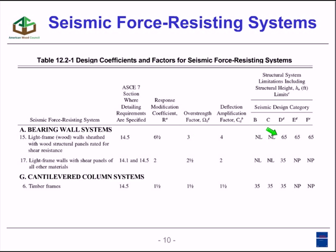This table also contains a height limit. If you're doing seismic design of a wood structure using the wood frame shear wall, your height limit is 65 feet. In contrast, if you have a light frame shear wall sheathed with another material like gypsum, the height limit is 35 feet. Category 17 is limited to seismic design category D within ASCE 7. As we get further into the presentation, you'll see there are some further limits on these other systems in category 17, and I'll remind you of those when we get to that point.